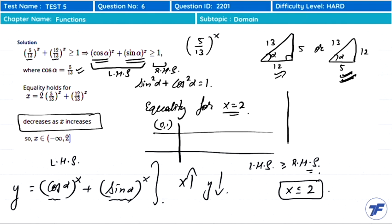If I take x = 1, this becomes sin α + cos α. Think about it: sin α + cos α becomes 5/13 + 12/13 = 17/13, which is obviously greater than 1. The inequality holds true, leaving aside equality.